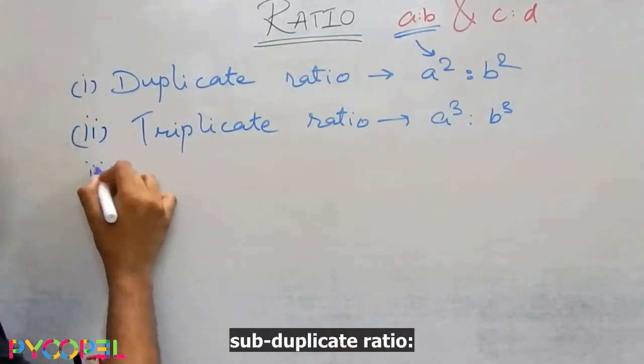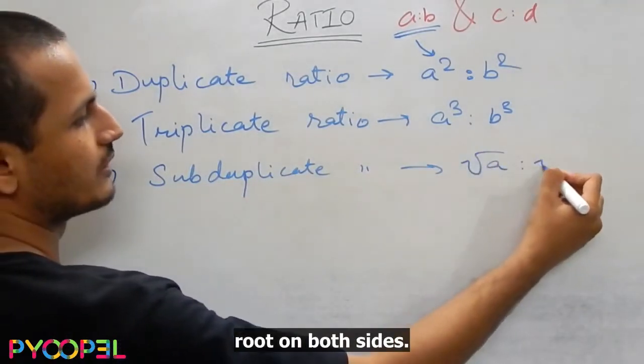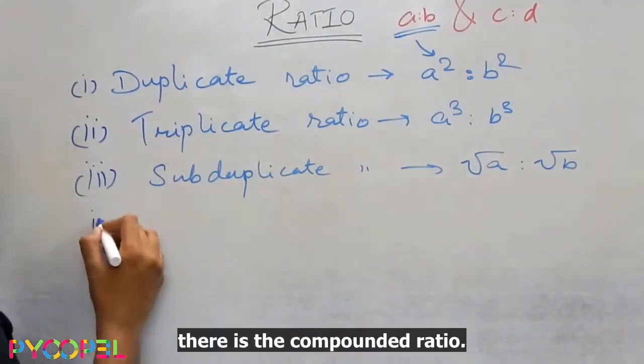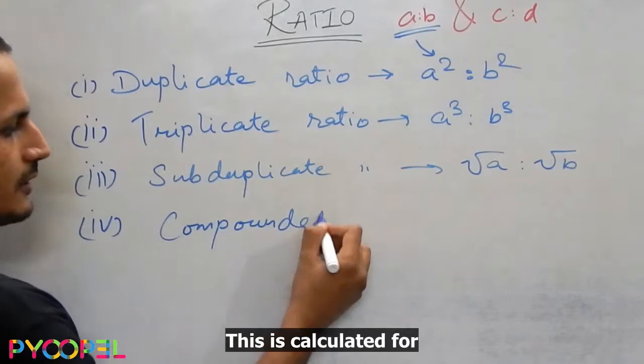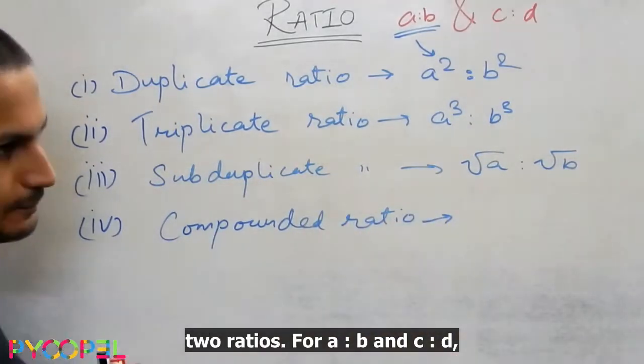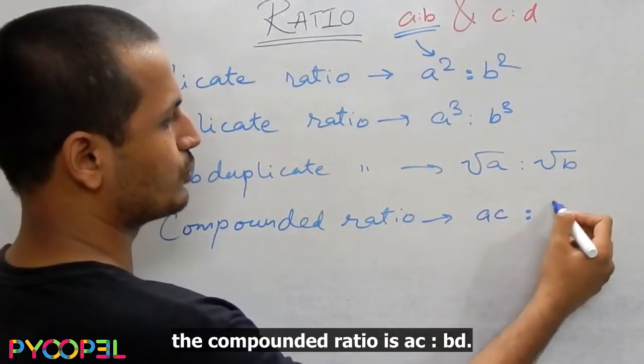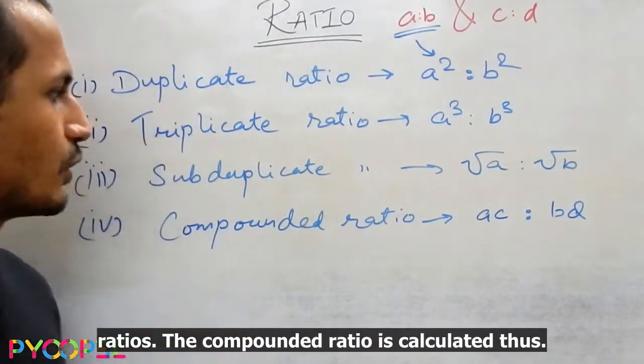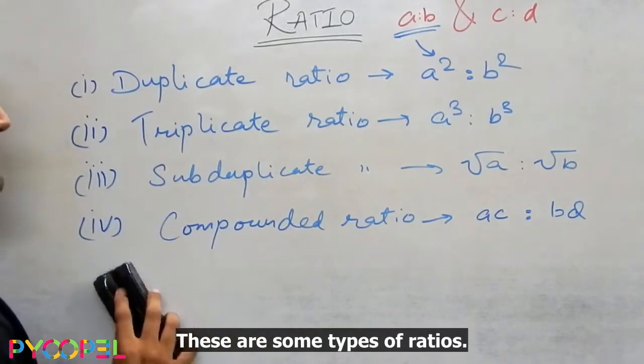So if they ask you in the question, what is the duplicate ratio for any ratio, you just square the antecedent and the consequent and you give them the answer. A triplicate ratio is just the cube of the ratio. Then there is the subduplicate ratio. This is the root on both sides. Now there is the compounded ratio. This is calculated for two ratios. For A is to B and C is to D, the compounded ratio is AC is to BD. Simply the product of the two given ratios.